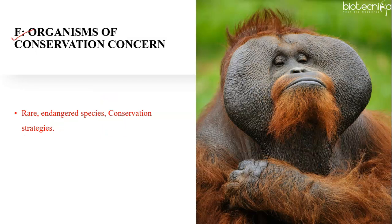Subunit F is about organisms of conservation concern, and this subunit is common with the last subunit of Unit 10 — Conservation Biology. So if you are preparing the last subunit of Unit 10, you can skip this subunit here. This subunit mainly focuses on rare and endangered species and conservation strategies, which are very important from an exam point of view. You can get statement-based or 'match the following' type questions where they give you a category and plant or animal species, and you have to identify whether the species is extinct, endangered, extinct in the wild, vulnerable, or near threatened.